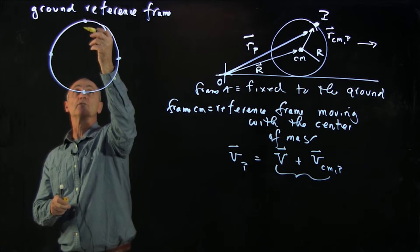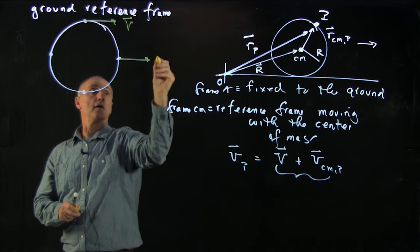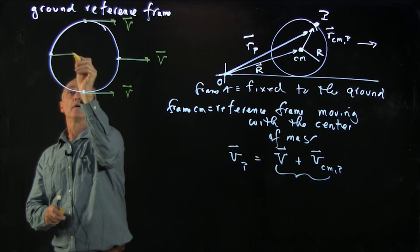Every single one of these points has the same velocity v, v, v, and v.